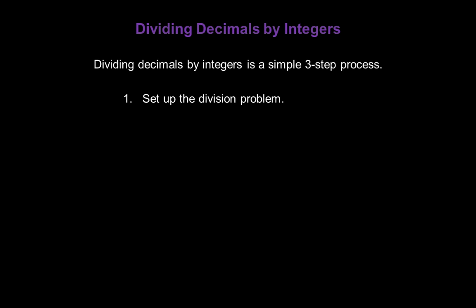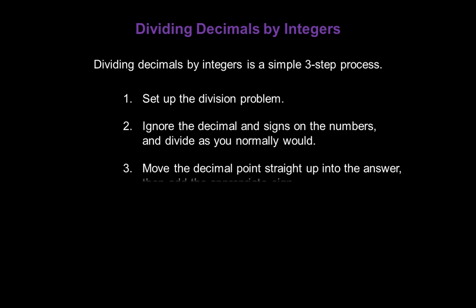Dividing decimals by integers is a simple three-step process. Step 1: Set up your division problem. Step 2: Ignore the decimal and any signs on the numbers and divide as you normally would. Step 3: Move the decimal point straight up into your answer and add the appropriate sign.